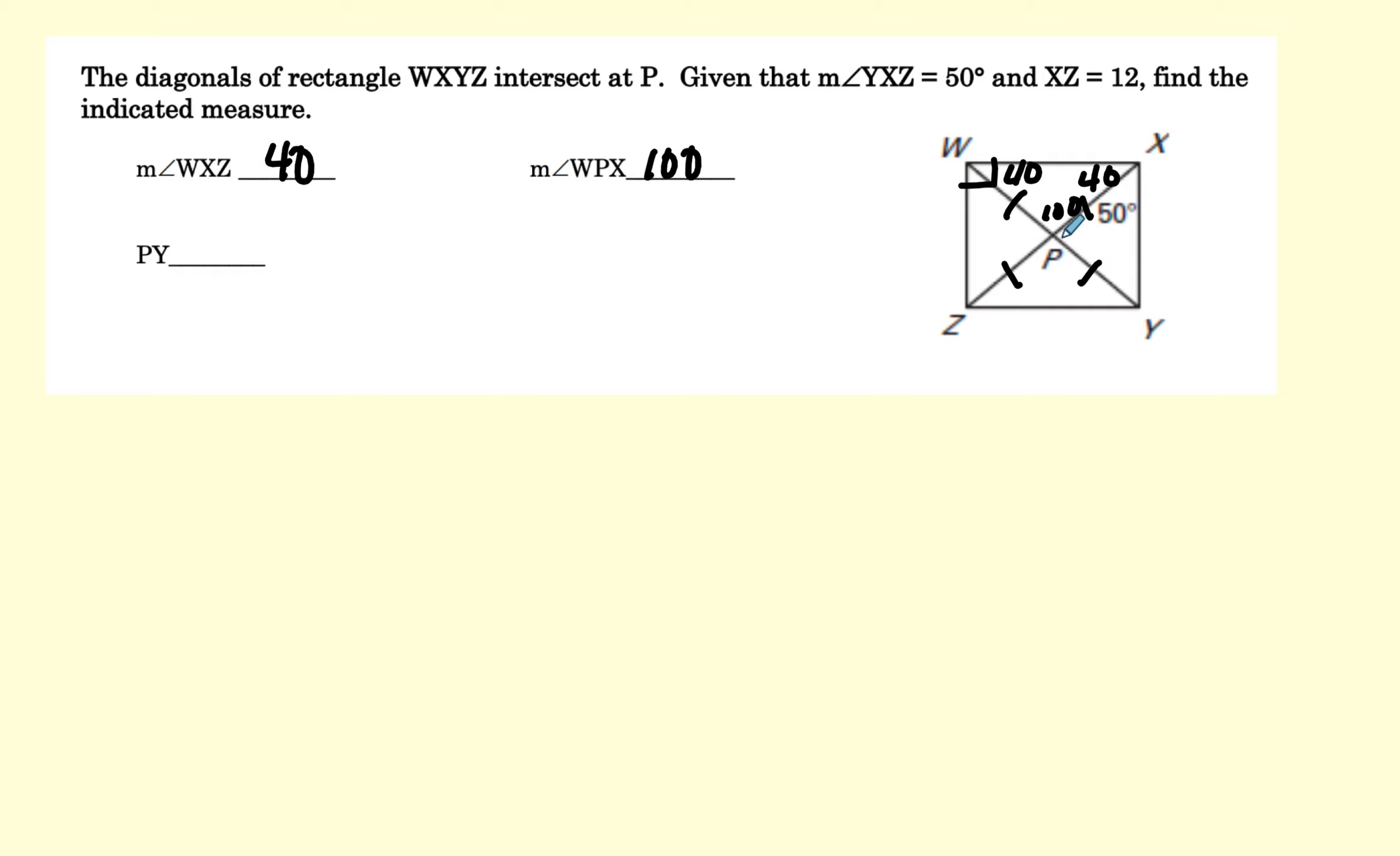And PY. PY will be, let's see, it says XZ. All the way across is 12. That's what it's telling me, XZ. So one diagonal is 12, so half a diagonal, that would be 6.